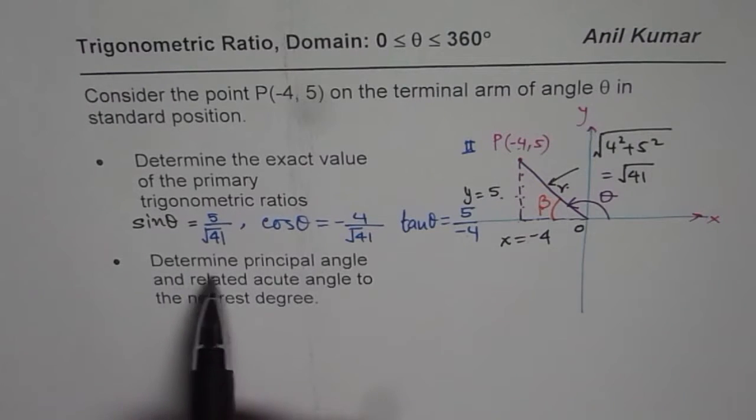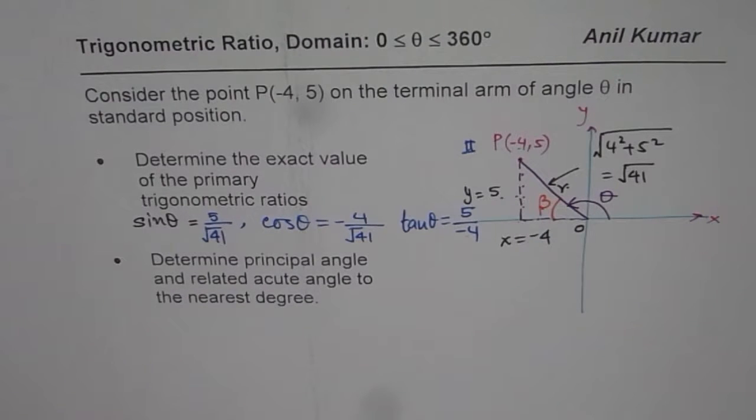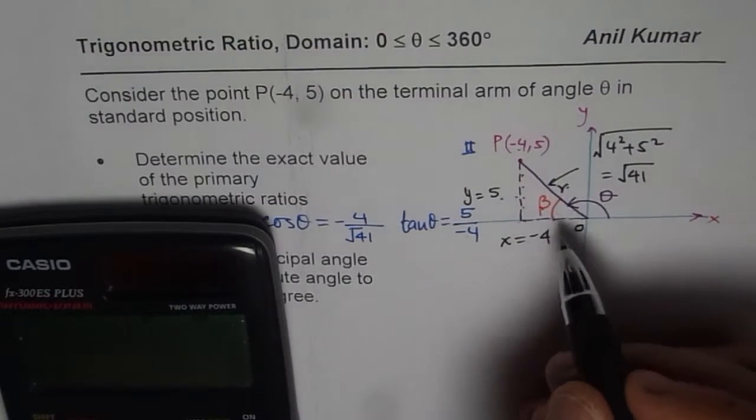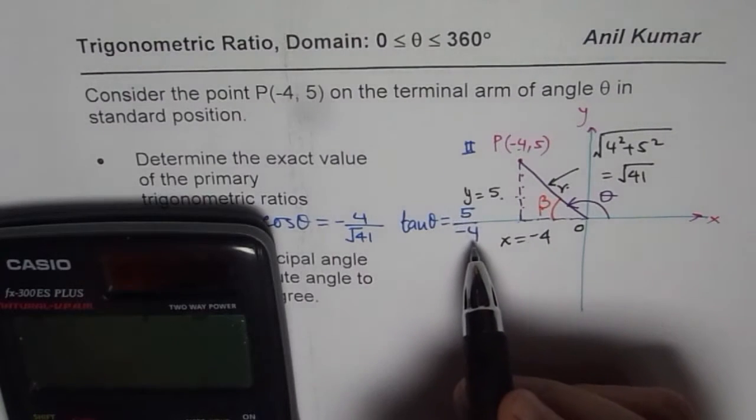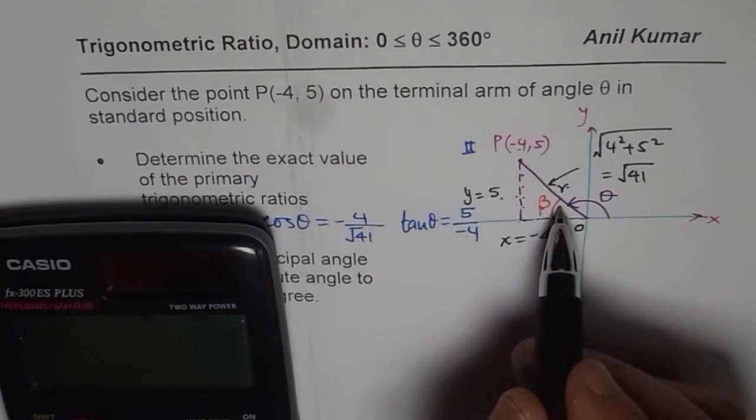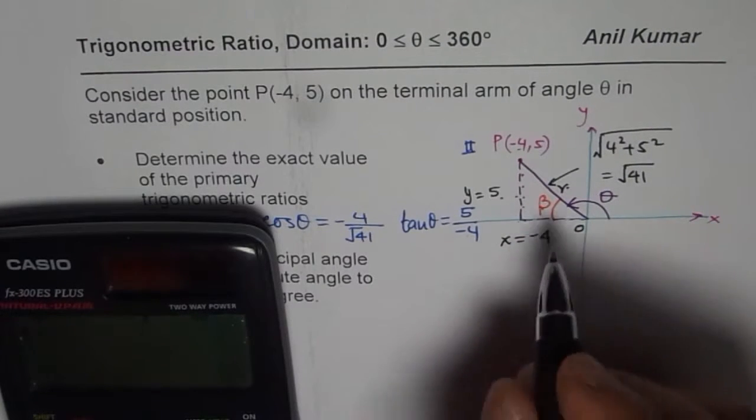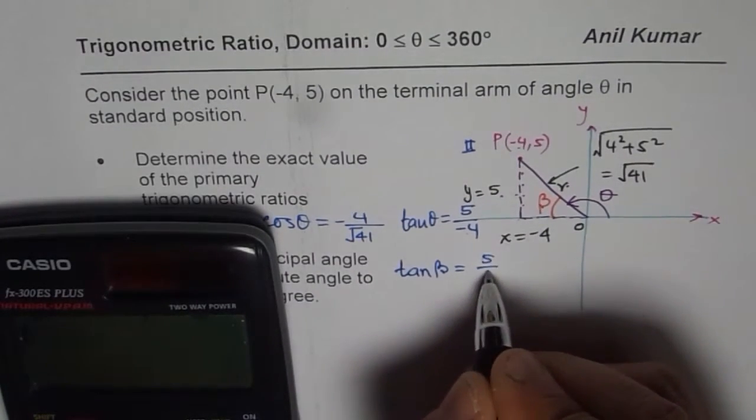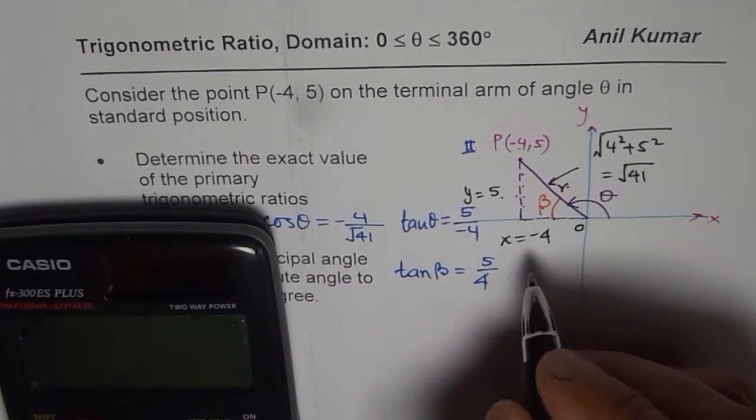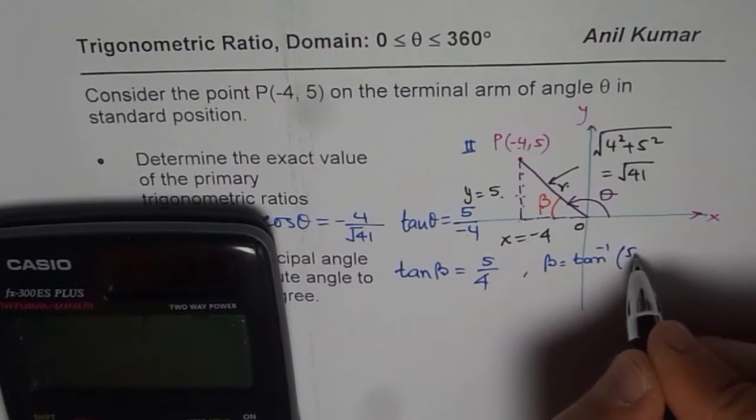Part B is to determine principal angle and related acute angle to the nearest degree. To find these angles, we can find this beta. We can use tan 5 over 4. Related acute angle means angle is less than 90. We are expecting a positive answer. We say tan of beta should be equal to 5 over 4. We have to take positive values. Beta is equal to tan inverse of 5 over 4.